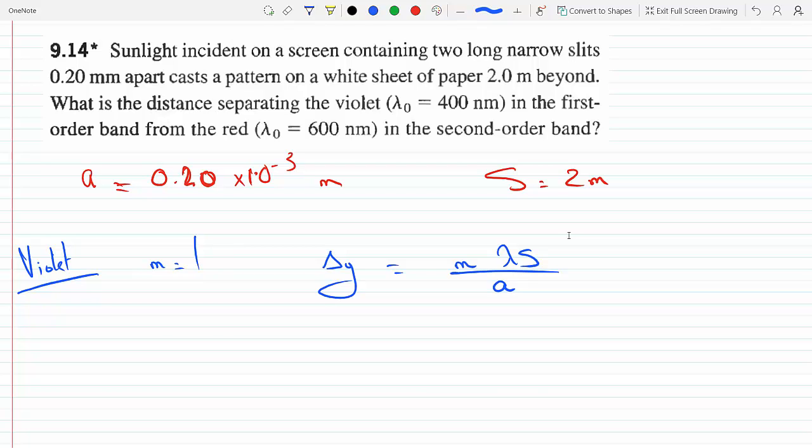So that's if you have the m fringe and the m plus one fringe, and delta y is the distance between them. So in this case here, m is one. Okay, so then I could find delta y for violet. So that's 400 times 10 to the minus 9 meters times 2 divided by 0.2 times 10 to the minus 3.